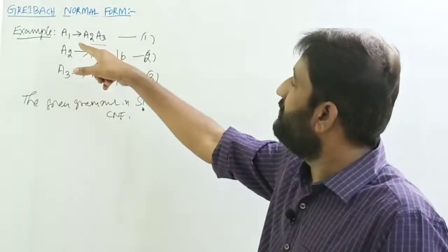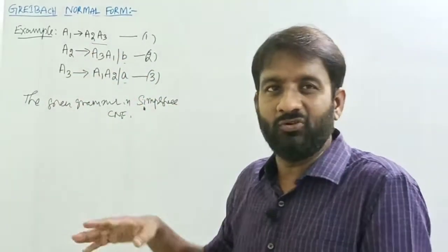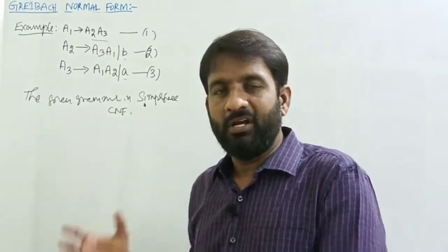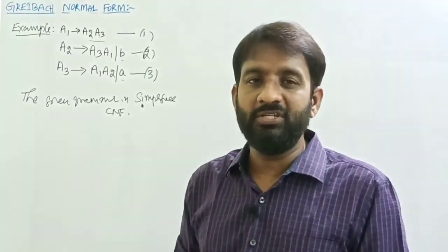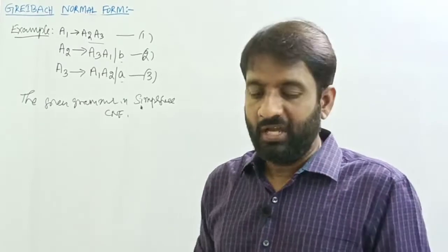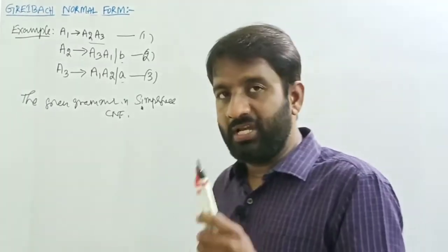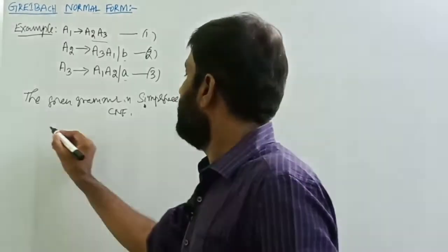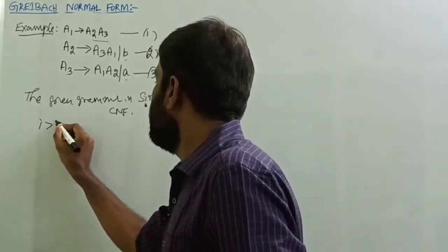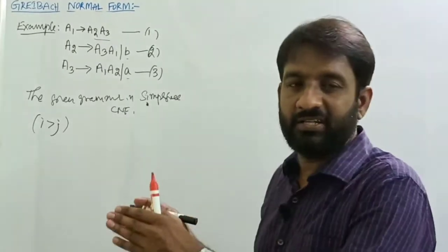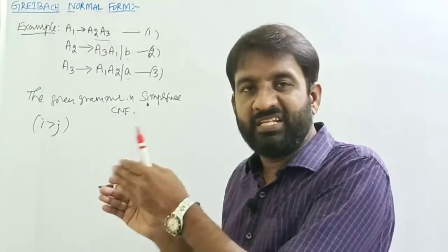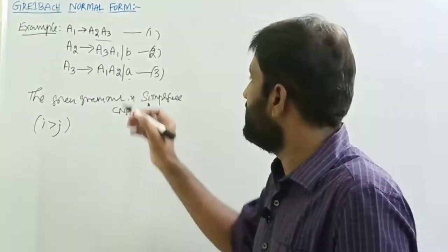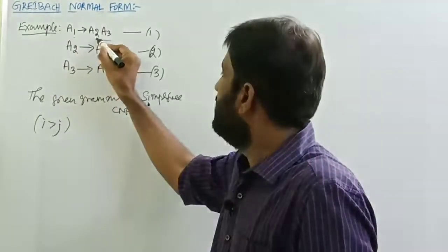The second step is a crucial point: choosing the right equation is important. We choose a production such that i is greater than j — meaning the left-hand side variable subscript is greater than the right-hand side starting variable subscript. Based on this rule, equation 1 has 1 less than 2, not okay; equation 2 has 2 less than 3, not okay.